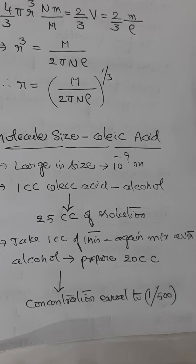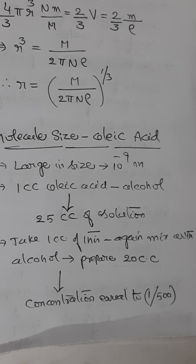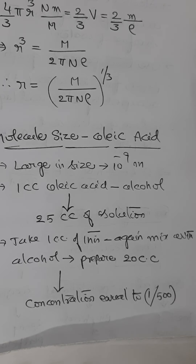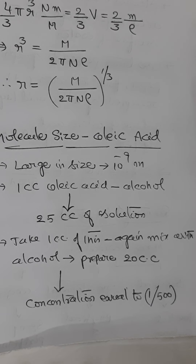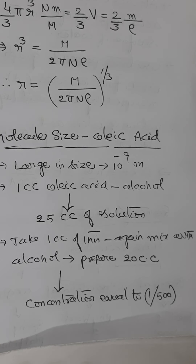In physical world and measurement, we are discussing direct and indirect methods of measurement. Let us understand how we measure the size of a molecule of an acid, for example oleic acid. The molecules of oleic acid are quite large in size, approximately 10 to the power minus 9 meters.